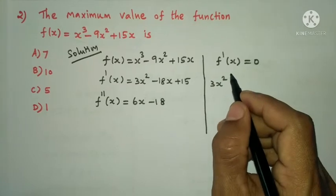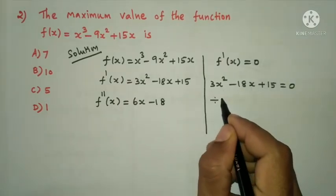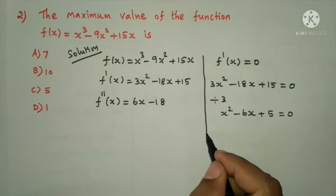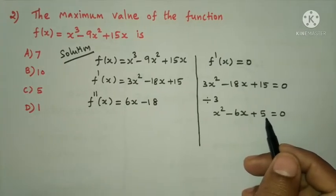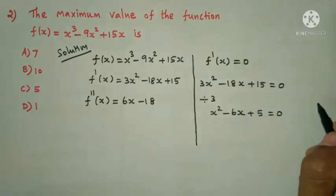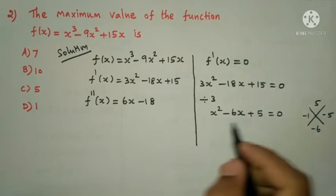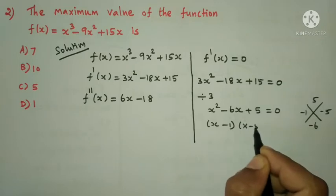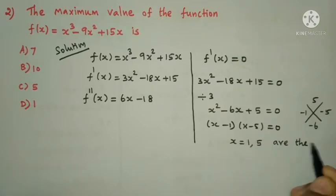Setting f'(x) equal to 0: 3x² minus 18x plus 15 equals 0. Taking out the common factor 3, we get x² minus 6x plus 5 equals 0, giving x equals 1 and x equals 5 as the critical numbers.